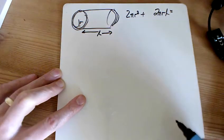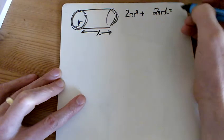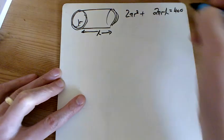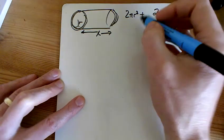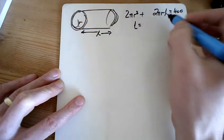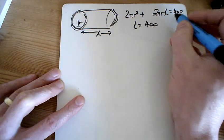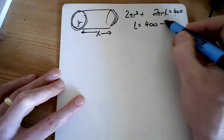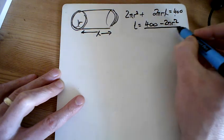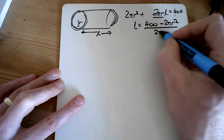And we know that that surface area, Max wants the surface area to be 400. Don't ask me why. If we rearrange that, we can see what L is. L is 400, take away the 2πR², divided by the 2πR.